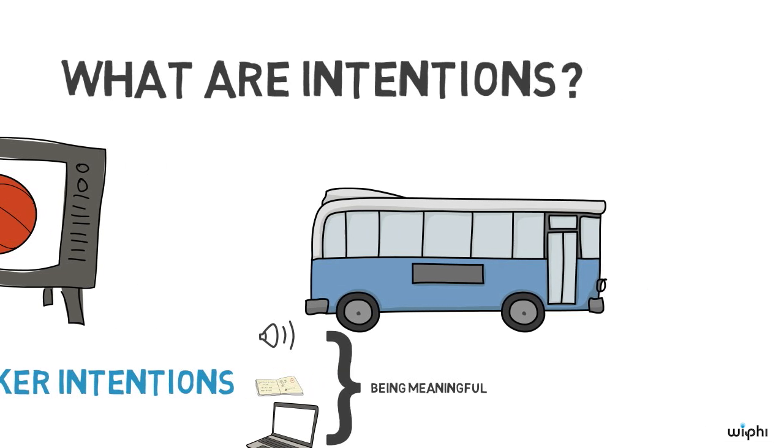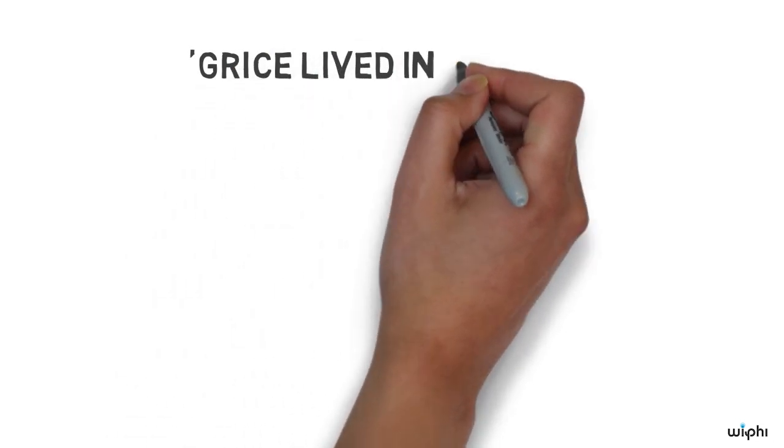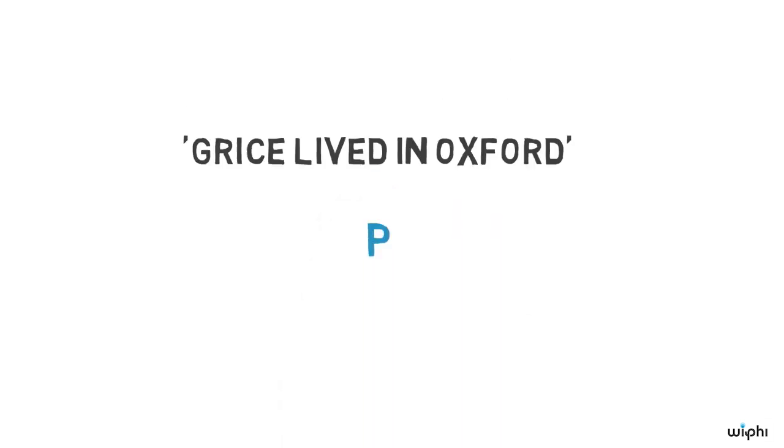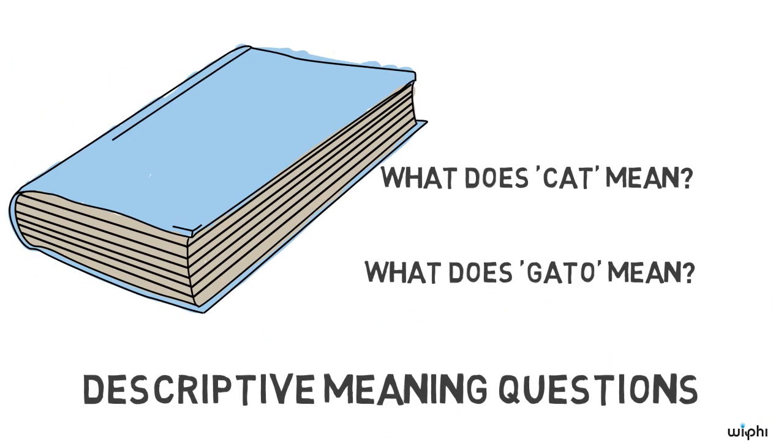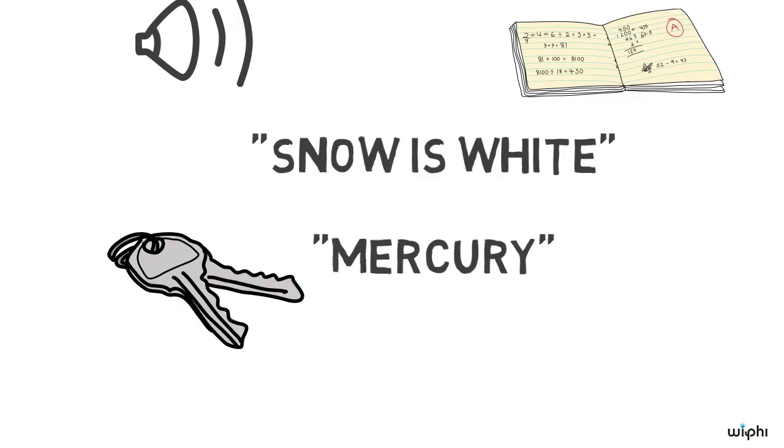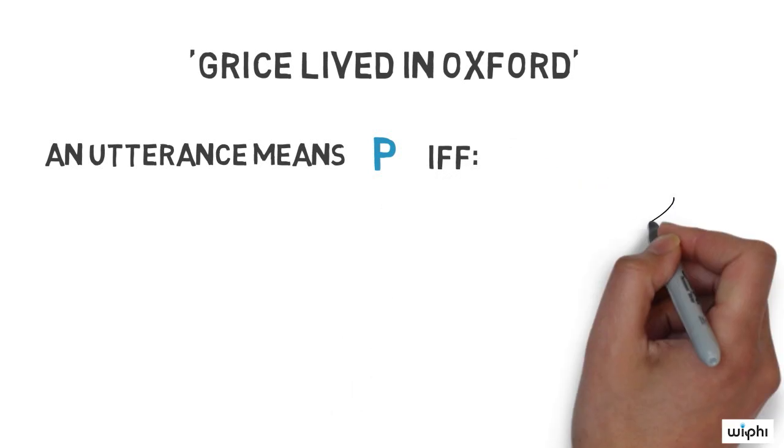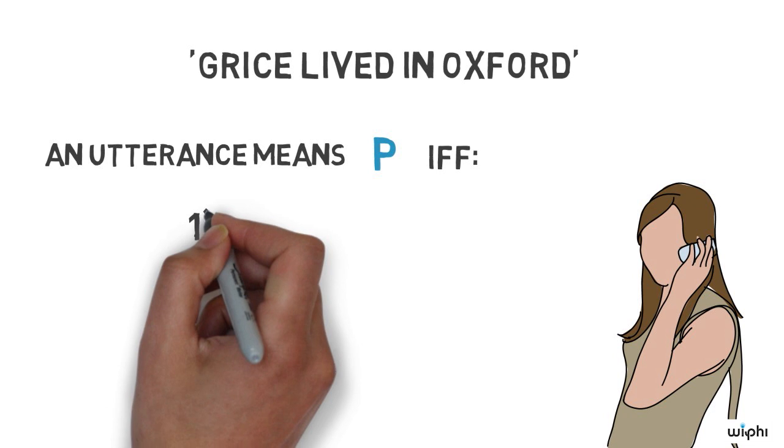Let's look at an example. I'm going to say a sentence now. Here goes. Grice lived in Oxford. You probably already know what this means. Let's call its meaning whatever it is, P. Remember, here we're concerned with foundational meaning questions rather than descriptive meaning questions, so we can sidestep questions about what the sentence means and instead focus on how it is that it has meaning. According to Grice, my utterance of that sentence means P just in case I, the speaker or writer, uttered that sentence intending three things.